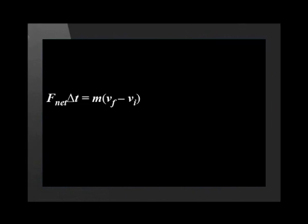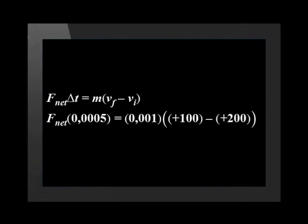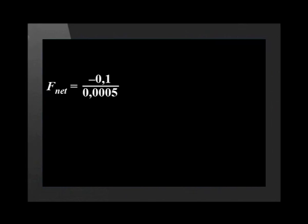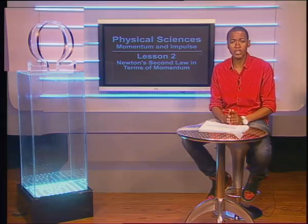We substitute into the formula which gives us net force times 0.0005 equals 0.001 times (positive 100 minus positive 200). So the net force equals negative 0.001 divided by 0.0005, which gives us a net force of negative 200 newtons. But remember, the negative means that the force is in the opposite direction to the velocity. So what we have is a retarding or slowing force of 200 newtons.